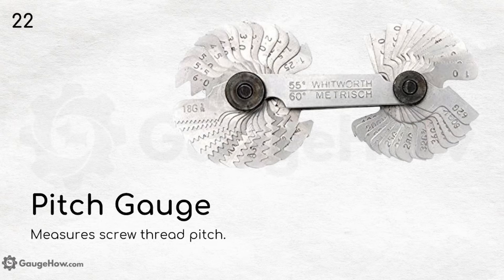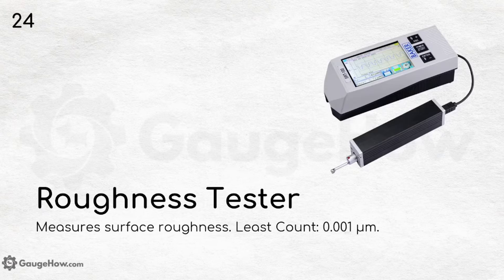Pitch gauge measures screw thread pitch. Roughness tester measures surface roughness, with a least count of 0.001 micron.